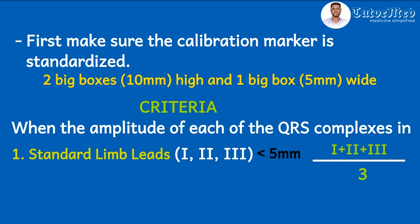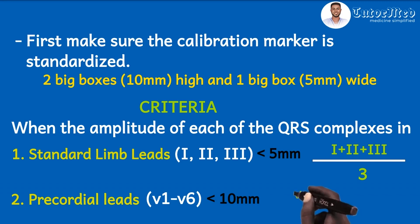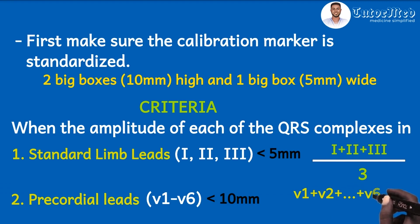Apart from the standard limb leads, you can also use the precordial leads V1 to V6. The criteria states the ECG has low voltage when the amplitude of each of the QRS complexes in all six precordial leads is less than 10 millimeters. Similarly, when the average of the tallest QRS complex in each of them — V1, V2, V3, V4, V5, and V6 — is less than 10 millimeters, that is a low voltage ECG.